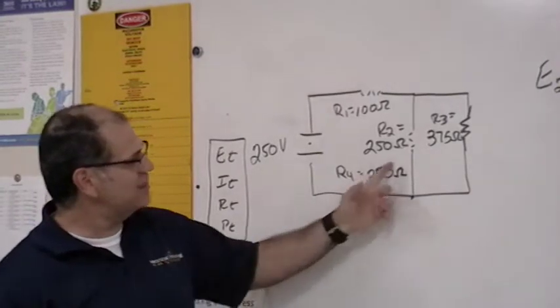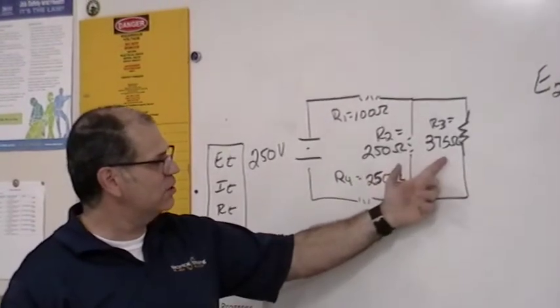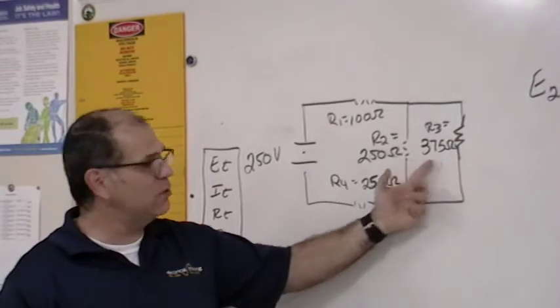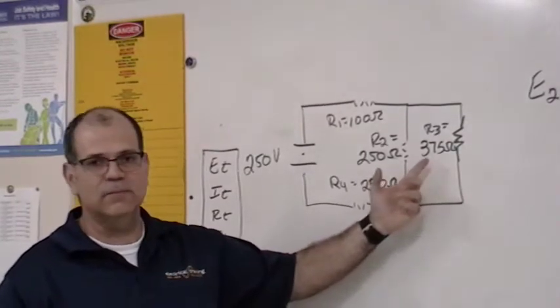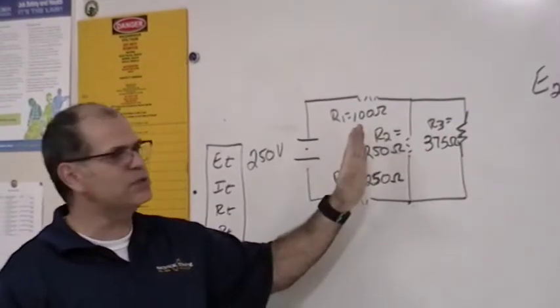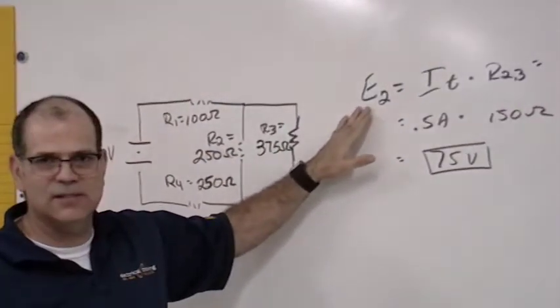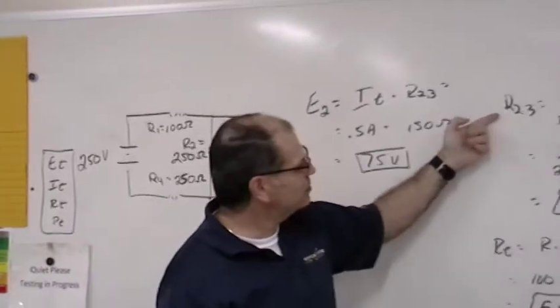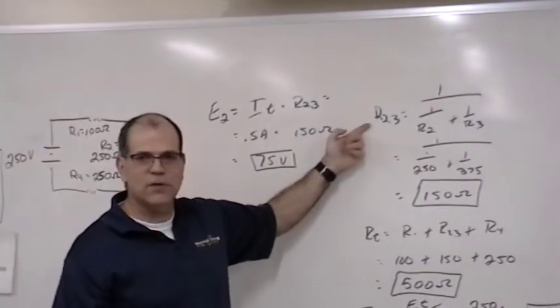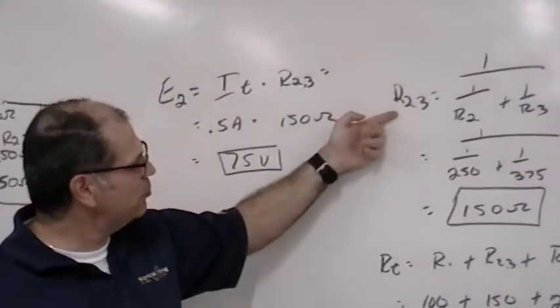So, in order to do this, I need to solve first for the reciprocal value of 2 and 3. And then I need to solve for the total resistance. So, in order to solve for the voltage drop across the second resistor, this is the first step. You need to solve for the reciprocal of 2 and 3, which here's your formula, the reciprocal formula.